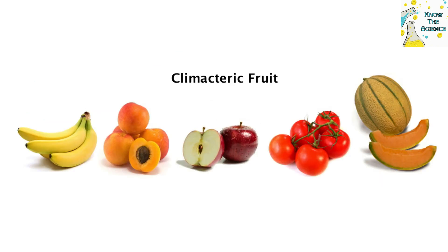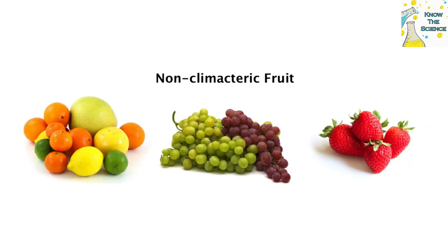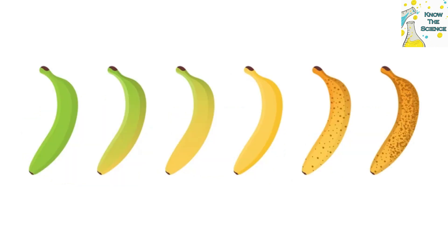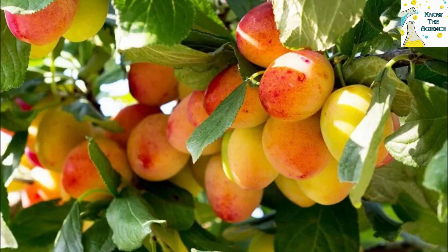Some fruits will continue to ripen after harvest, such as mangoes, apples, bananas, melons, apricots, and papaya, while some will not, such as grapes, citrus fruits, and strawberries. As the fruit ripens, changes occur in enzyme composition and activity. In general, fruits are best harvested and consumed fairly close to ripening.